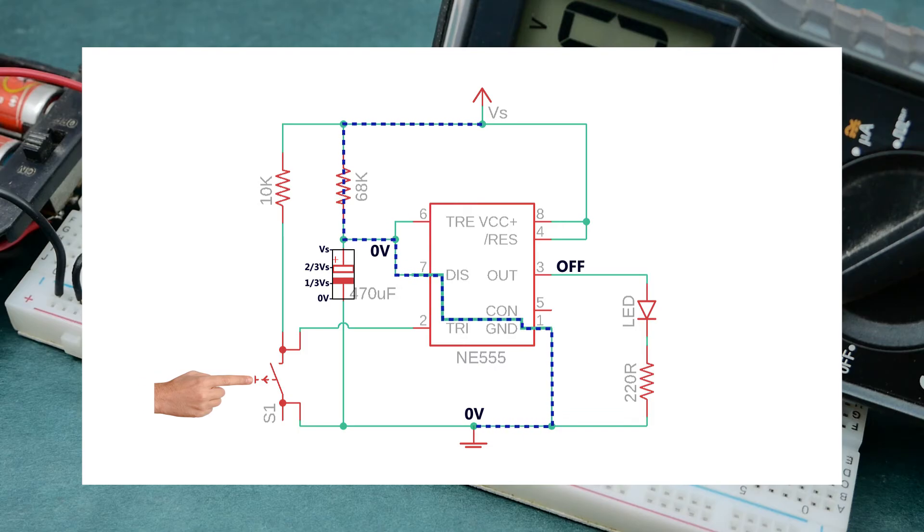After the momentary pushbutton switch is pressed, which means that the delay timer is activated, the following sequence happens. 0V is applied at the trigger pin, pin 2 via the pushbutton switch. And since this supplied voltage, which is 0V, at pin 2 is less than one-third of the supply voltage, the output turns ON.